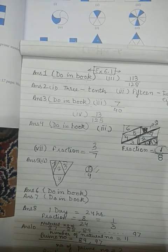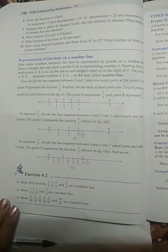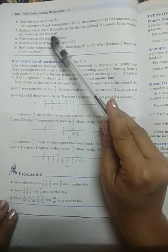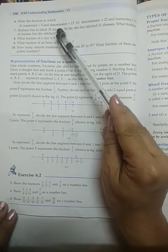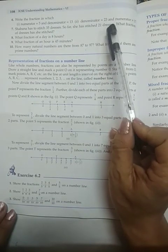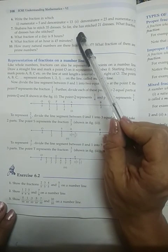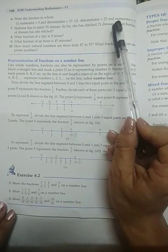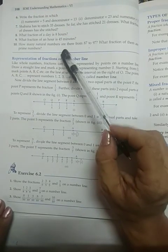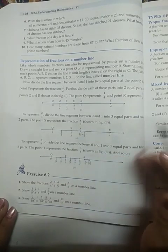Now let us read questions 6 and 7. In question 6, we have to write down the fraction — I have already given you the points in the conclusion on how to do that. In question 7, the total dresses are 35 and out of that 21 are stitched. Accordingly, write down the fraction: total comes in the denominator, whatever is stitched comes in the numerator. Do these two questions in the book itself. Questions 8, 9, and 10 are very important, and as the duration of the class has extended, I will take these three questions in the next class. Thank you for today.